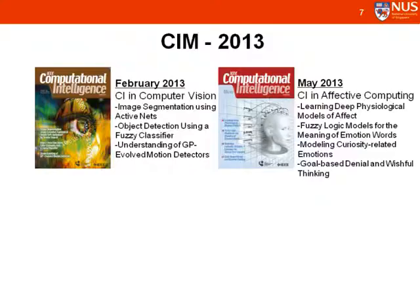For this year, we have published two issues in February and May: CI in computer vision in February 2013, and CI in affective computing in May 2013. We also put a number of copies outside the registration desk, which you are welcome to pick up if you don't have a copy.